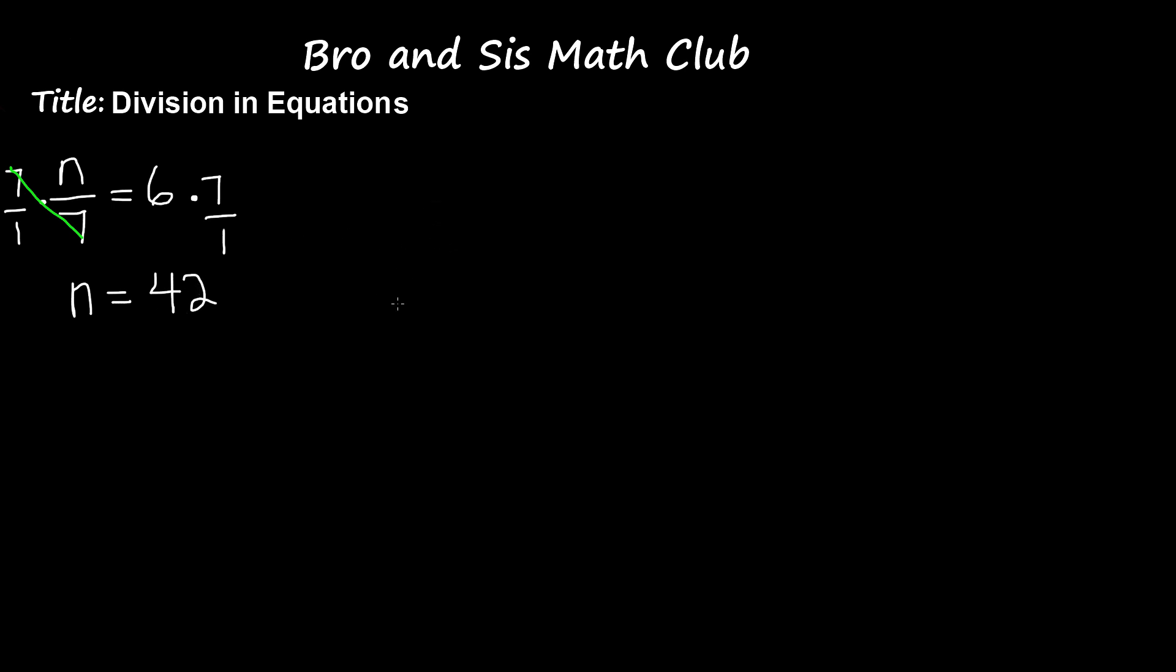Now let's check our answer. So now we have n over 7 is equal to 6. Let's rewrite this using our answer. So 42 over 7 is equal to 6, and 42 divided by 7 is 6. So 6 is equal to 6, and our answer is correct. N is equal to 42.